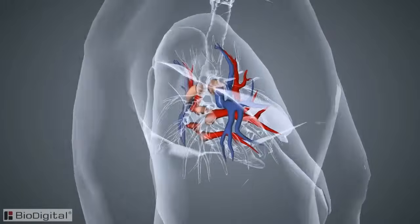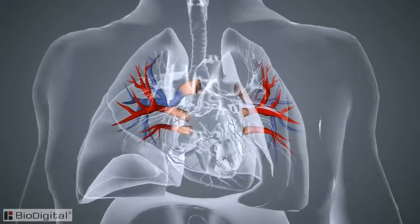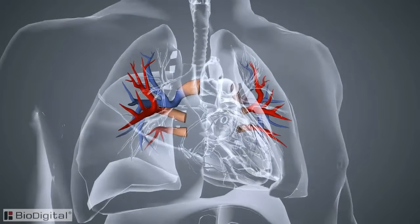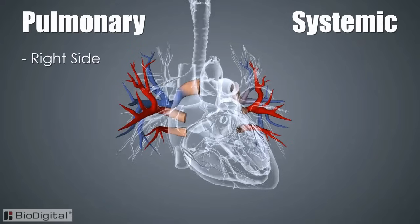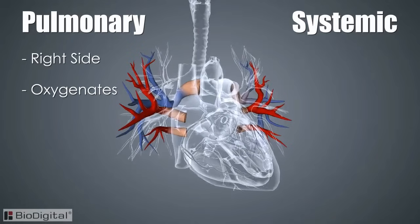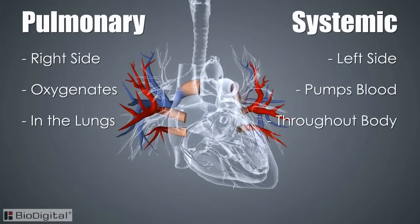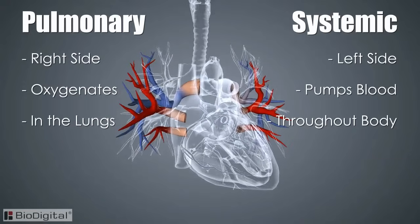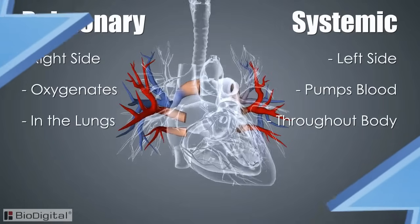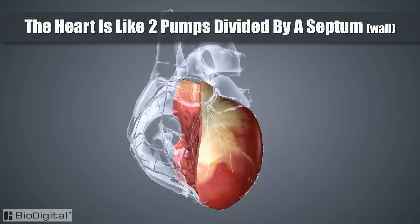The heart has two major circuits within the circulatory pathway which work together in a closed circulatory system. These two pathways are the pulmonary pathway and the systemic pathway. The right side of the heart pushes the blood through the pulmonary circuit so that it can be oxygenated in the lungs. The left side pumps oxygenated blood to the entire body, and the blood is then returned via the systemic pathway. The heart is actually two pumps divided by a septum, or wall.